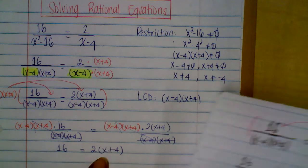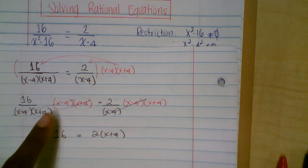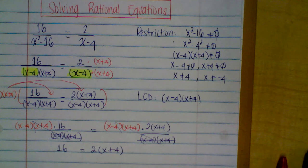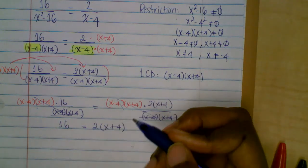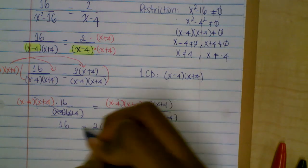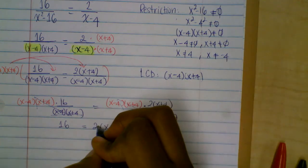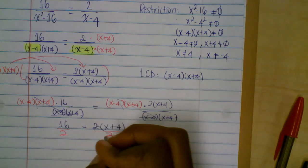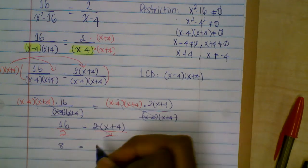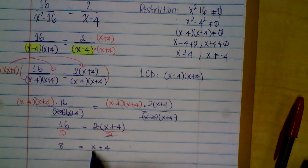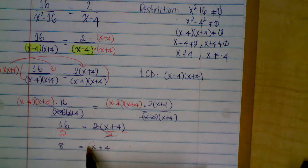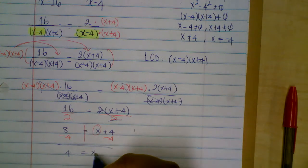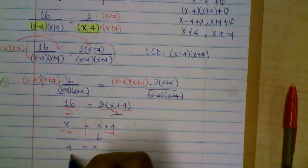So now the trick is: you could multiply by the LCD right away and simplify correctly. Now we distribute — or, since two is multiplying and 16 is even, let's divide both sides by two. That gives us 8 equal to x plus four. To solve for x, subtract four from both sides, and we end up with x equal to four.